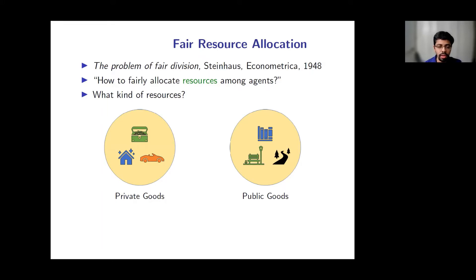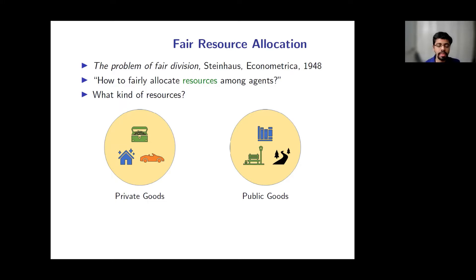A private good, like jewelry, gives value only to the agent it is assigned. On the other hand, a public good, like a book in a library or a park, can provide value to multiple agents simultaneously. In this work, we study a model of public goods allocation and its connection to private goods. We also assume that goods are indivisible, so they cannot be broken up into fractional pieces.